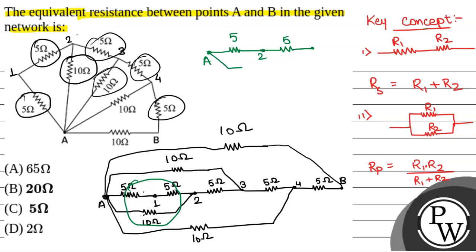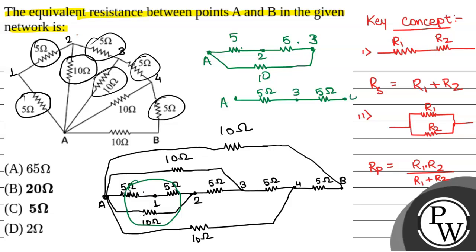And between A and 3, there is a 10 ohm resistor. So again, this will be 5 and 5 in series giving 10, and 10 in parallel with 10, that will give 5. So between A and 3, there will again be a 5 ohm resistor. Then between 3 and 4, there is again a 5 ohm resistor, so this will be 5 ohm.